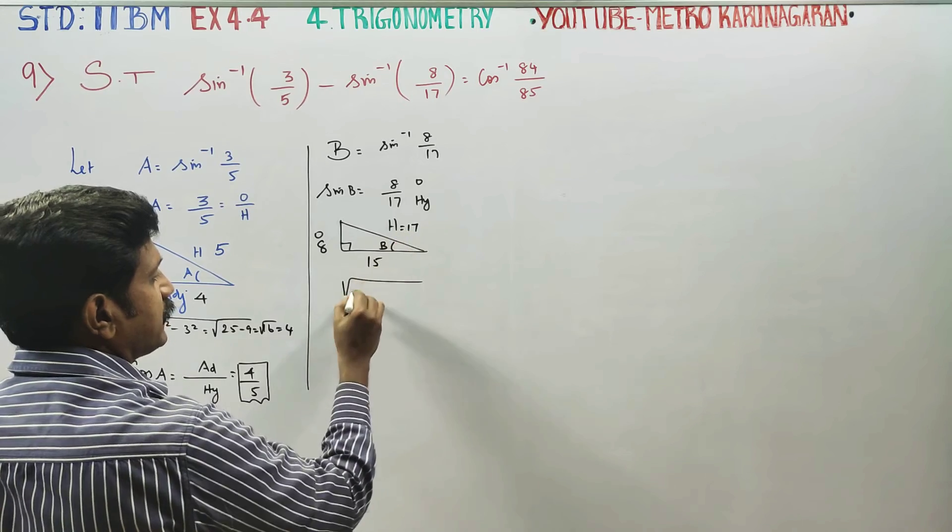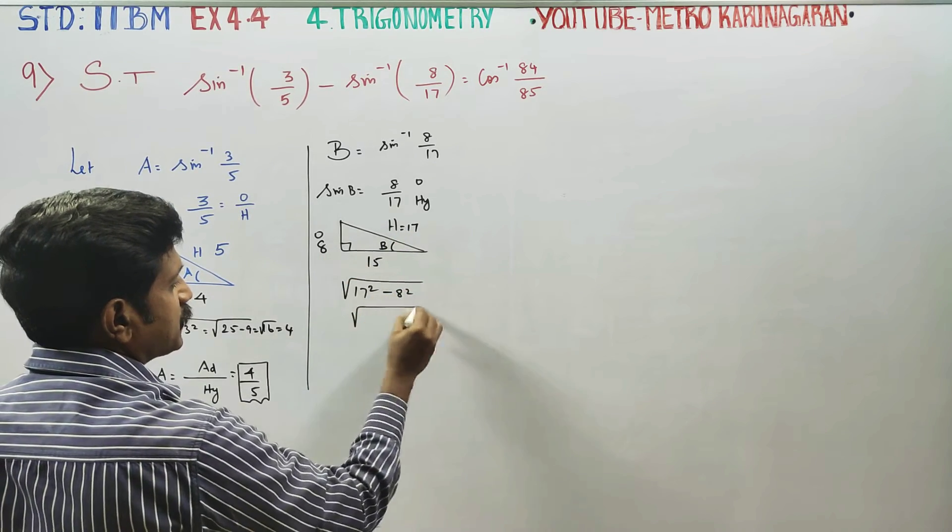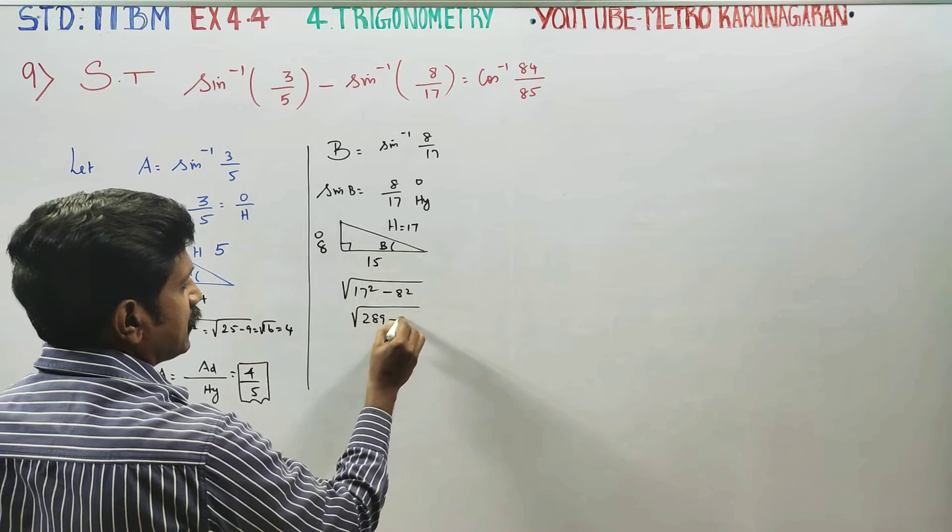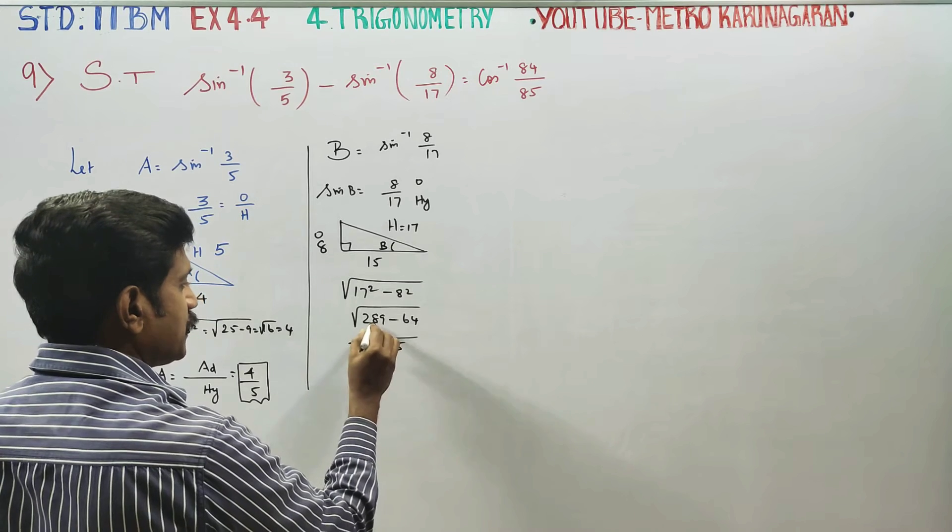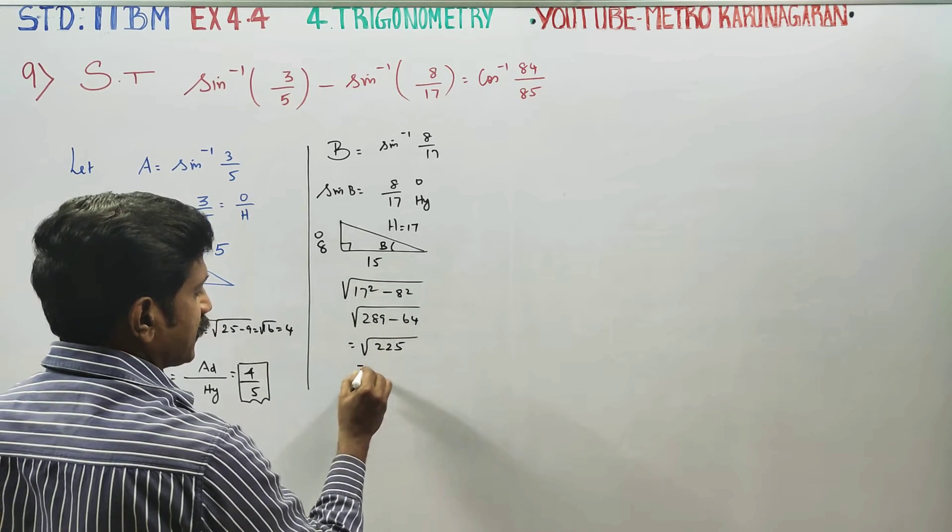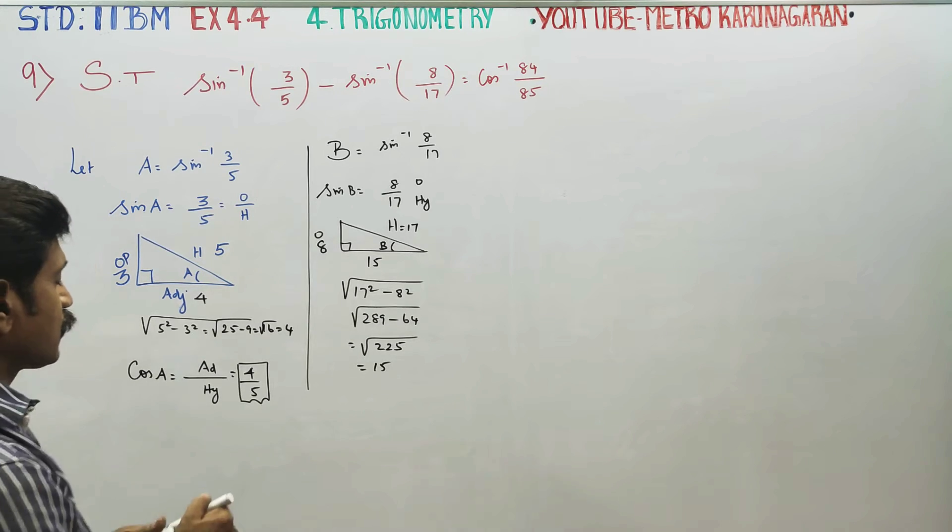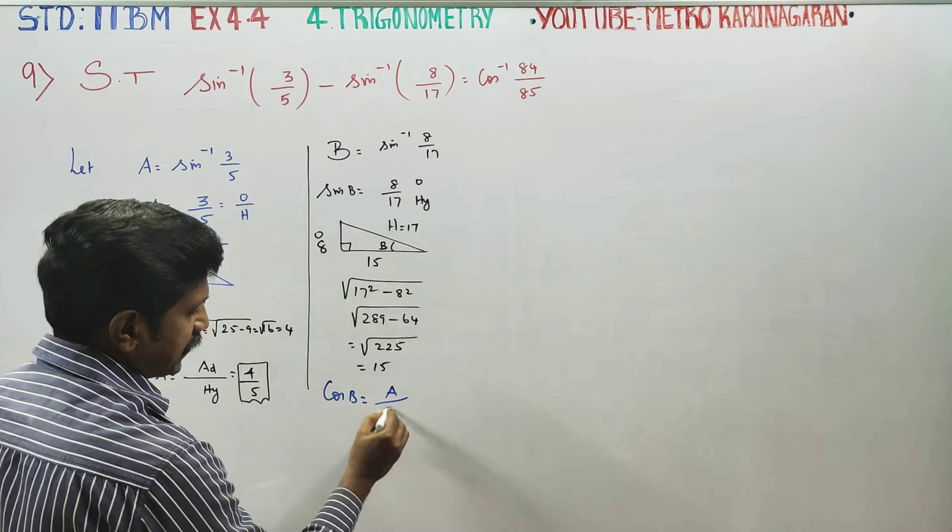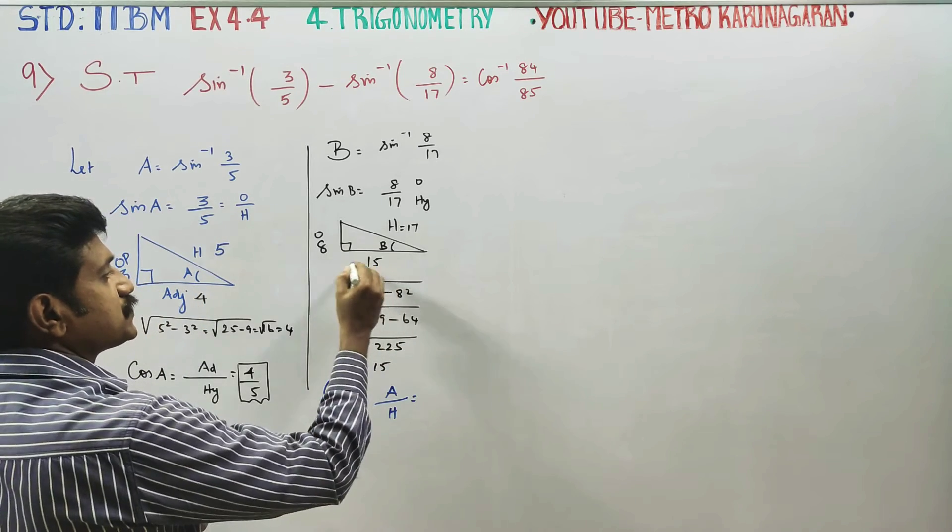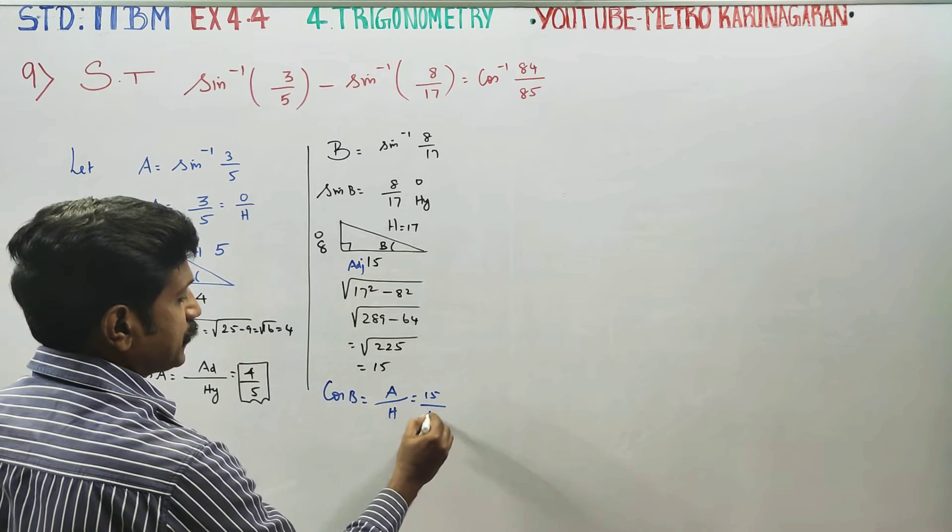Square root of 17 square minus 8 square equals square root of 289 minus 64, which equals 225, answer is 15. I want to go to cos B. Cos B is equal to adjacent by hypotenuse, 15 by 17.